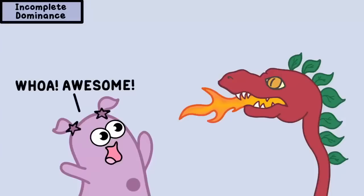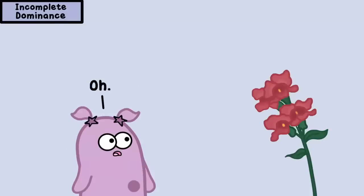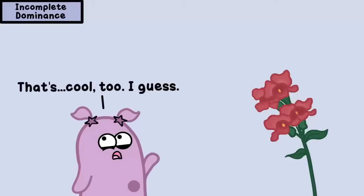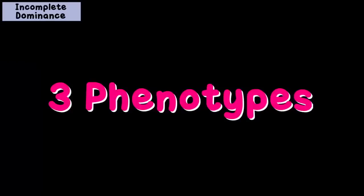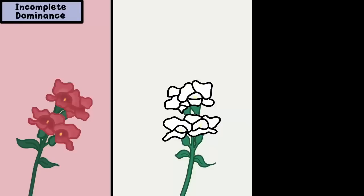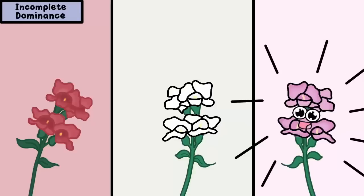So let's first start with snapdragons. We confess that when we heard this word, we thought they were some really amazing kind of creature. Well, they are amazing, but they're flowers. In snapdragon genetics, there can be three phenotypes: red, white, or something in between — pink.